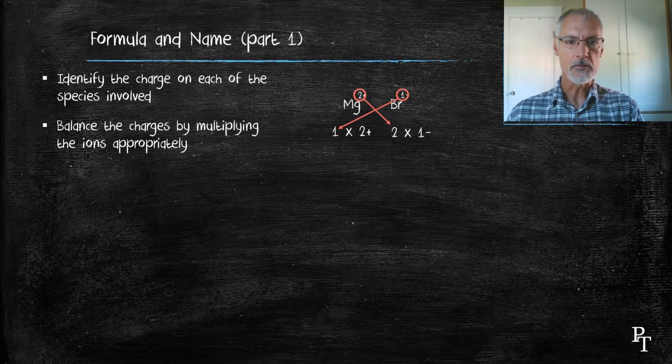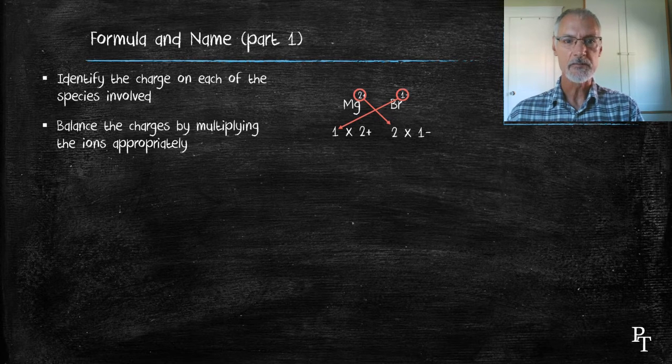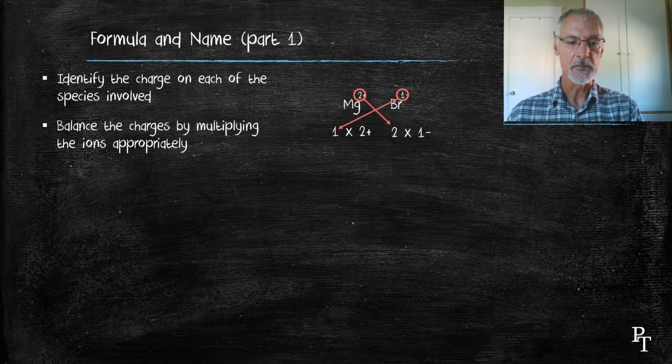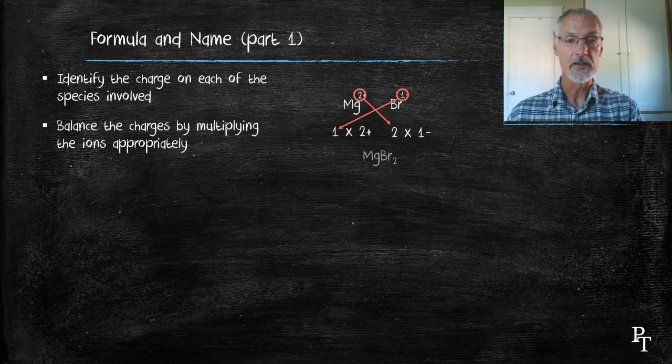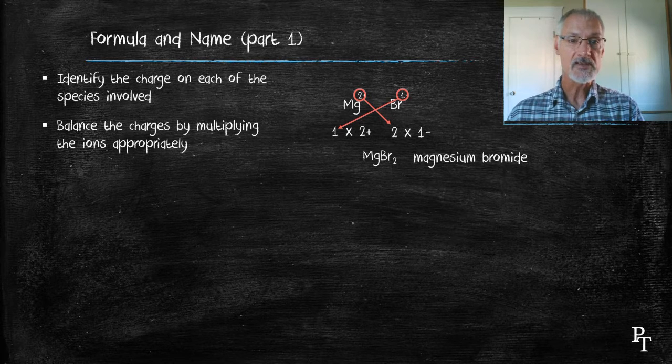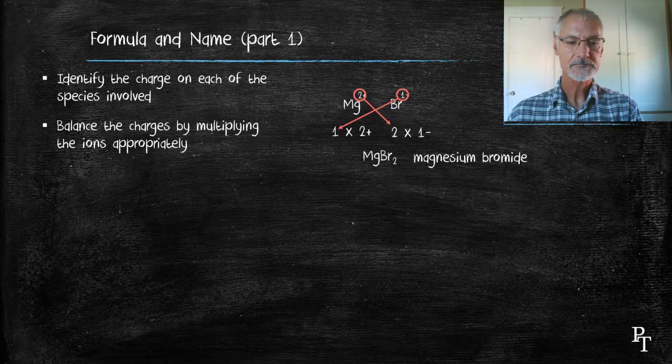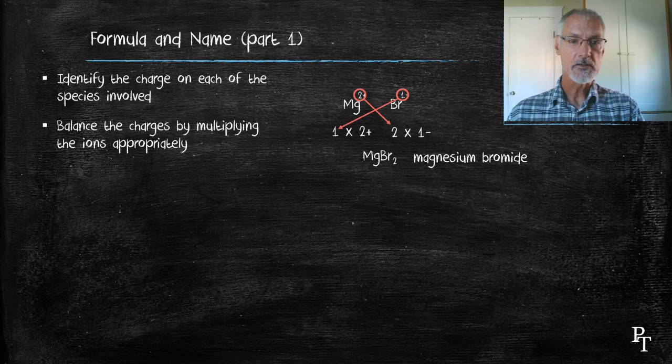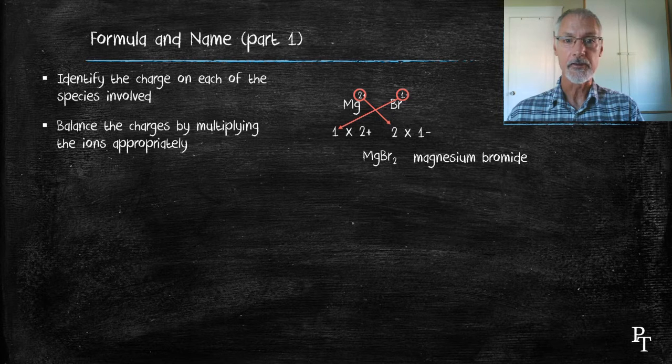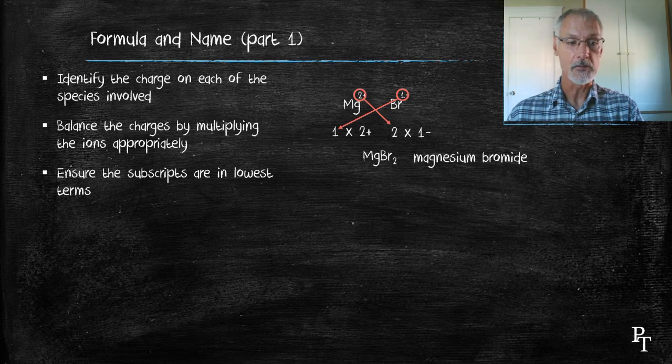Some of you might recall this as the crisscross rule taught sometimes in younger grades. We take the coefficient, or at least the magnitude of the charges, and apply them to the opposite ion. That gives a formula of magnesium bromine with two bromines. The formula changes its name from magnesium bromine to magnesium bromide to indicate an ionic bond. We also ensure at this point that we have the subscripts in the lowest terms. In this case, a 1-to-2 ratio is in lowest terms.